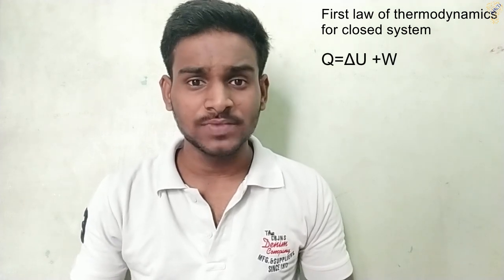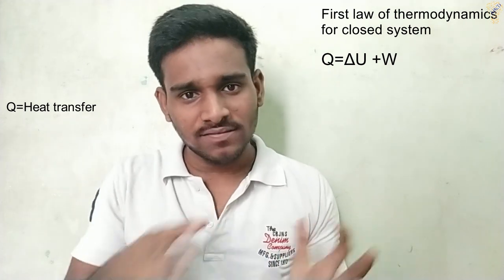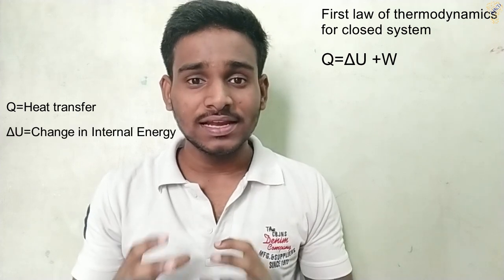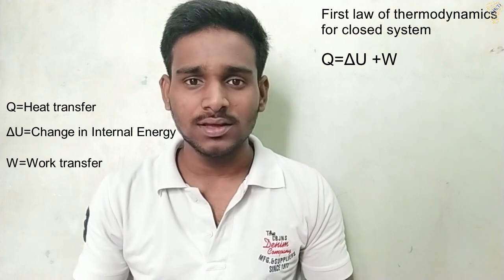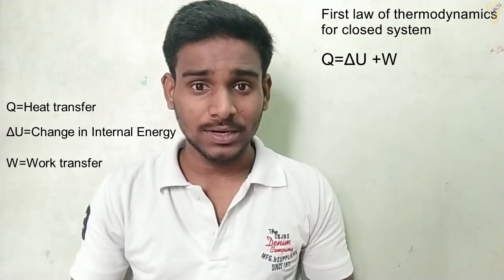Q is equal to delta U plus W. Delta U is the internal energy of the system. If you look at the heat, you can heat the gas and increase the energy. This is the first law of thermodynamics: Q equals delta U plus W. Internal energy is not just one type — it includes internal kinetic energy, internal potential energy, internal heat energy, and internal nuclear energy.